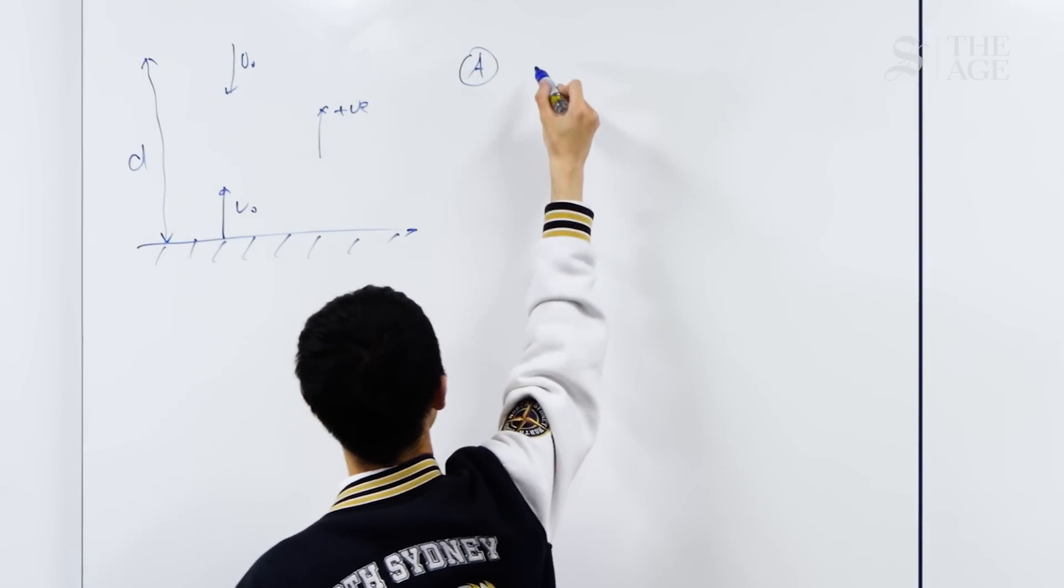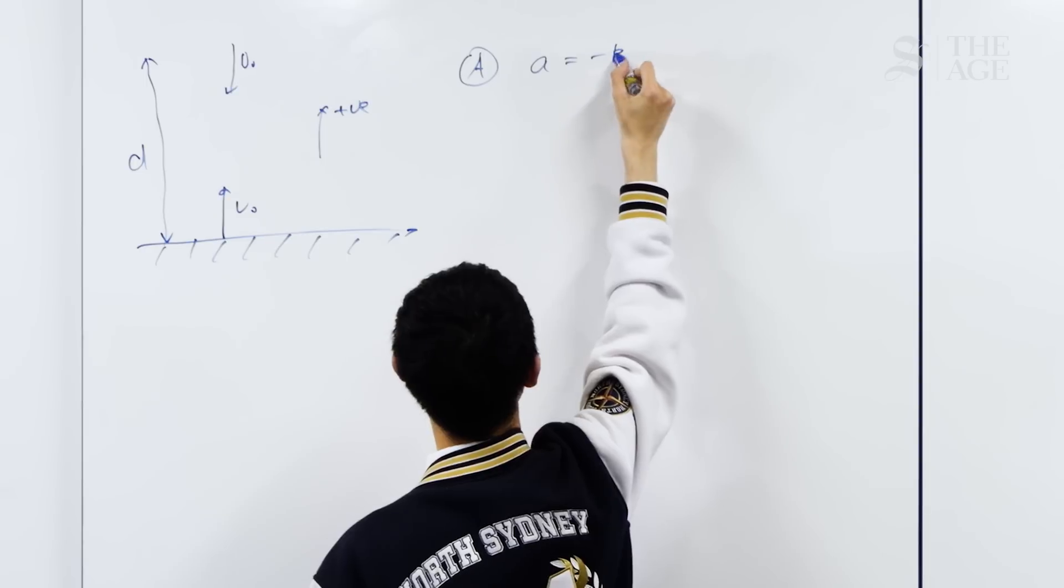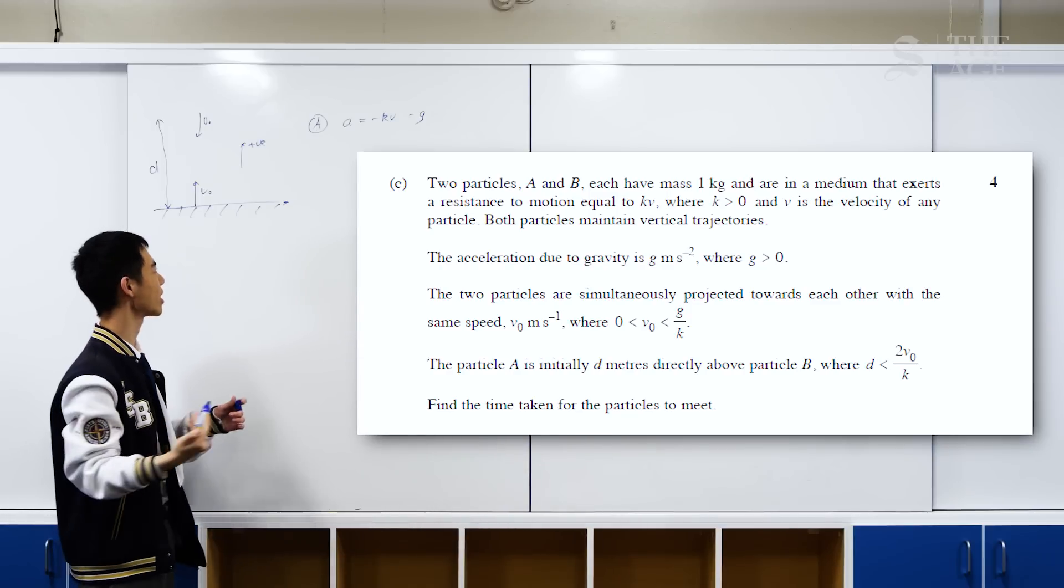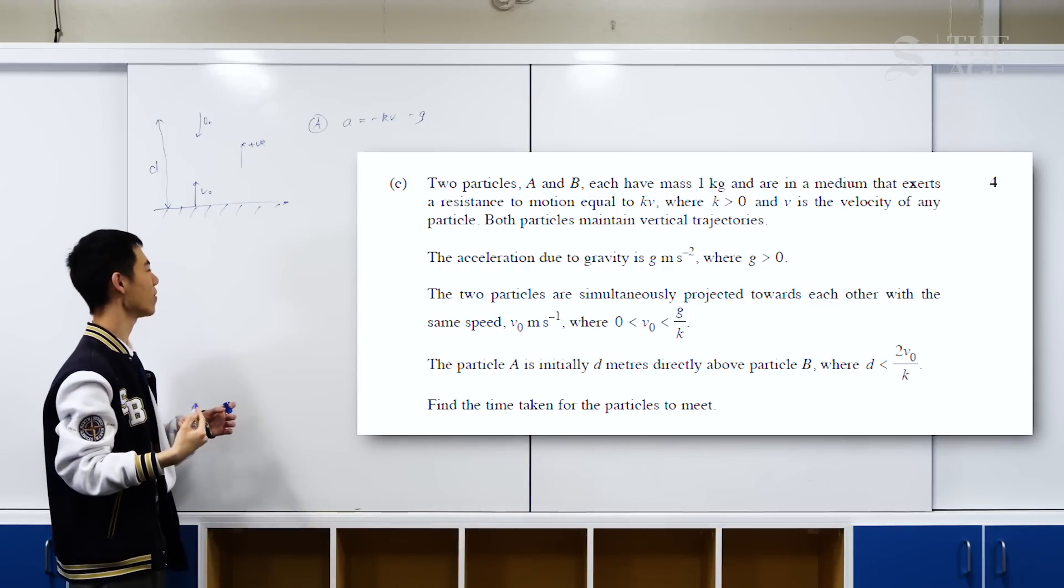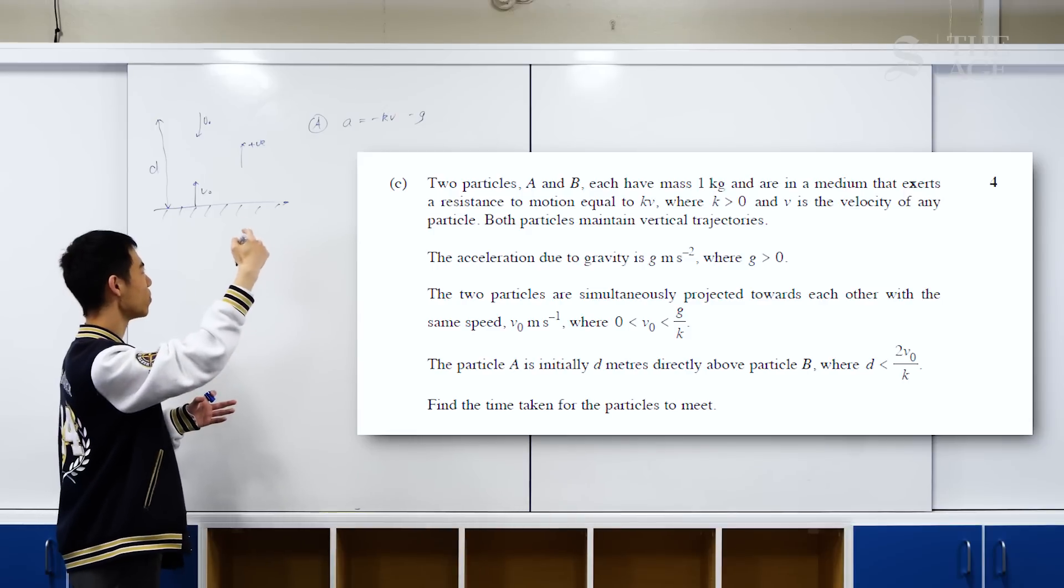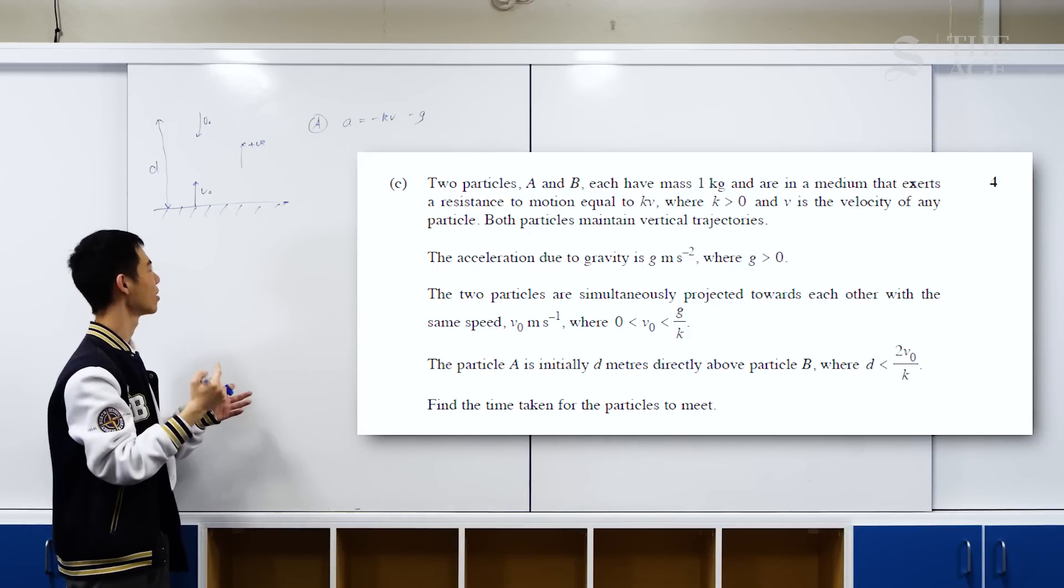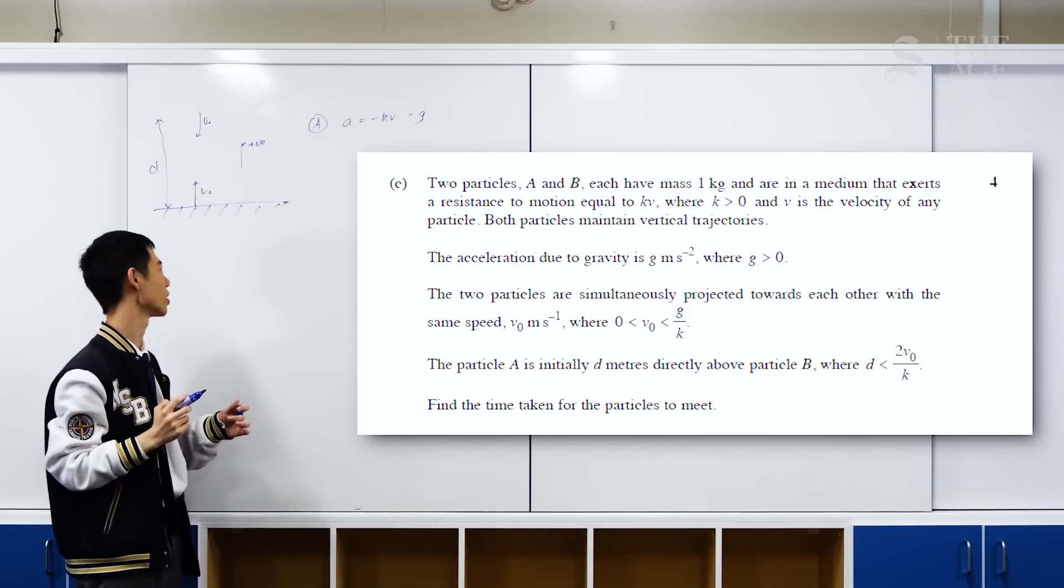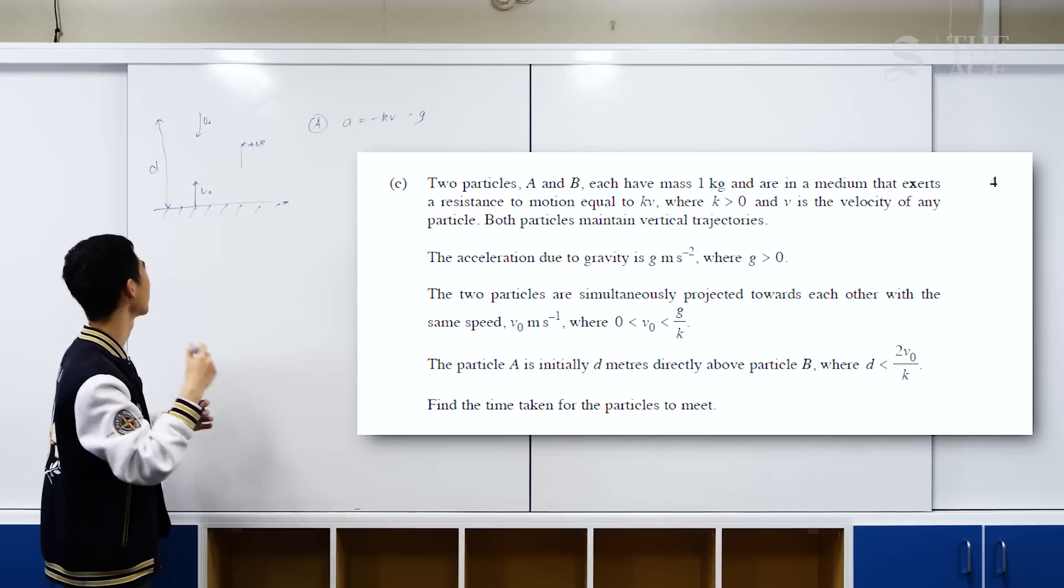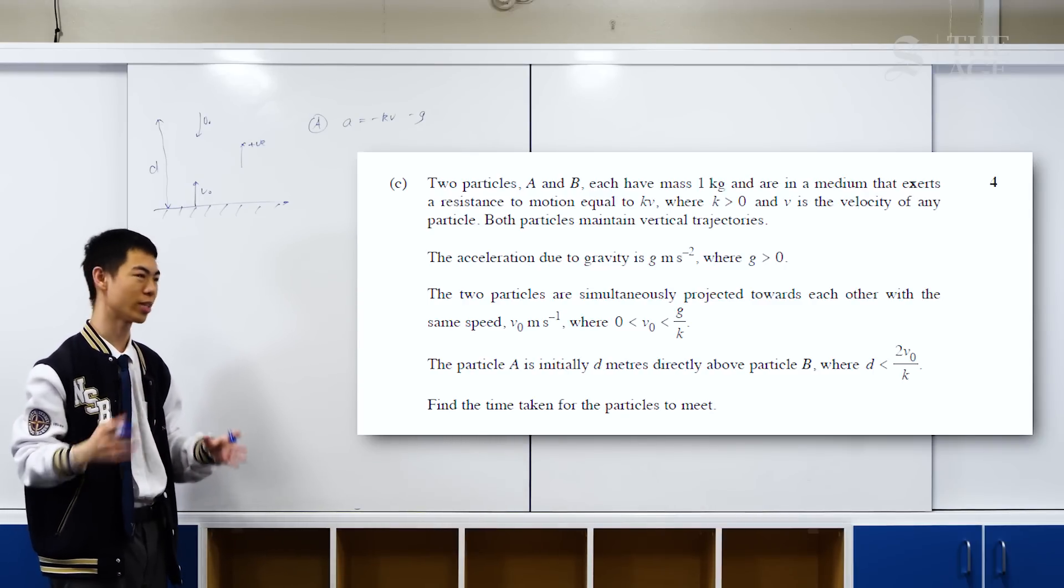For particle A, we have acceleration equals negative kv minus g. The question didn't actually give us this equation, but they gave us something similar to it. In this case, we have velocity being negative for the first particle, but we also have a negative k. So overall, the resistance force goes up, which is positive, and the g, which is gravity, goes down, so it's negative. It's really easy to get the signs confused, so be careful here.